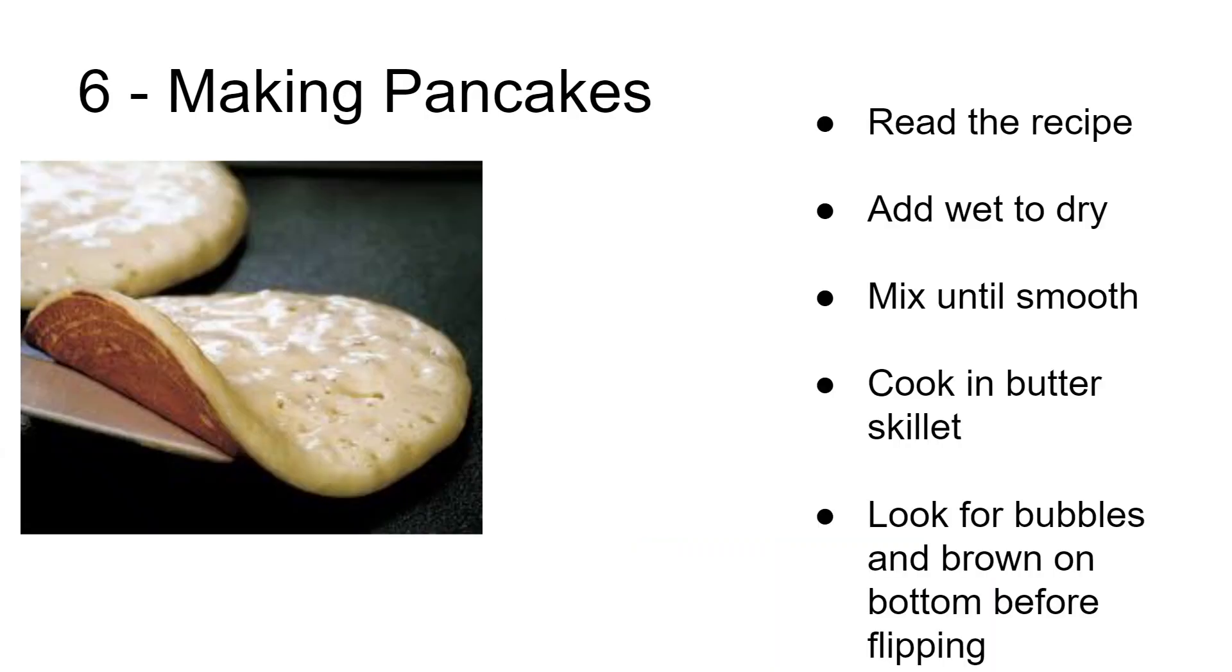You want to start by reading the recipe together. The general gist of how they are made is: in the bowl you'll put the dry ingredients and then you'll add the wet ingredients. You'll mix it until it's smooth—as it turns out, lumps are not good in pancakes. Then in a skillet with butter, you'll pour a little bit of batter onto the skillet and it'll form a pancake. You'll know when it's time to flip them over when you see lots of bubbles and it's brown underneath.